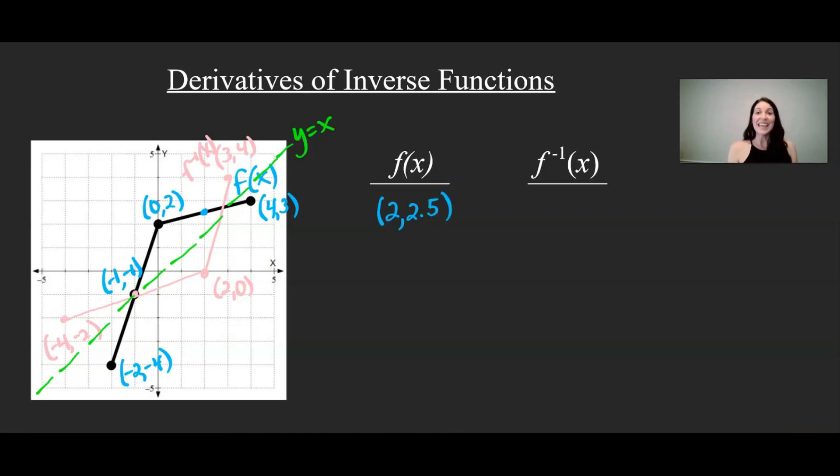Alright, on the inverse function, that point now becomes 2.5, 2, which would be 2.5, 2, which would be right here.